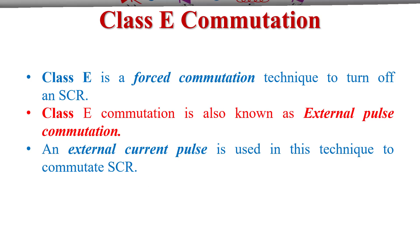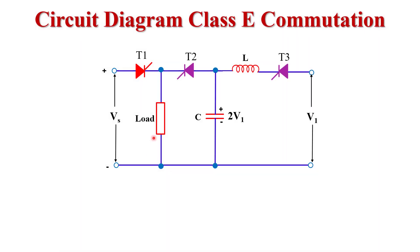Now we discuss the circuit diagram of class E commutation. Here we use two voltage sources: Vs is the main voltage source, and V1 is the auxiliary or external voltage source. We use three thyristors — T1, T2, and T3. T1 is the main thyristor and T2 and T3 are the auxiliary thyristors. Other components include L and C, which act as commutating components, and there is also a load.